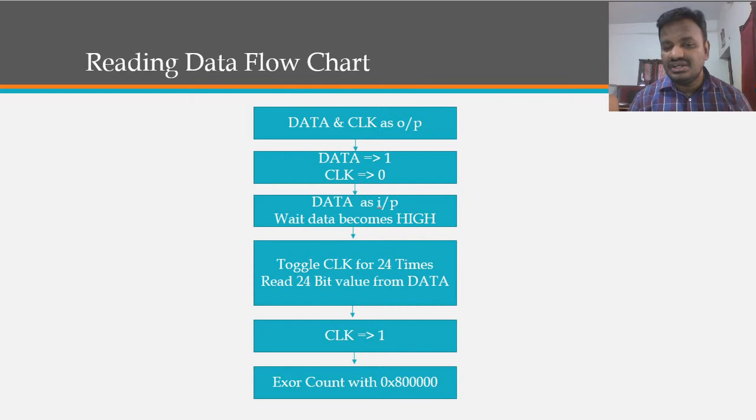We will be having the data flow chart. Configure data and clock as output, make the clock data as one and clock as zero, and make that data pin as input. Wait till it becomes high so that it generates the start for that.